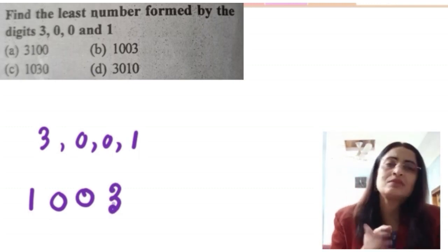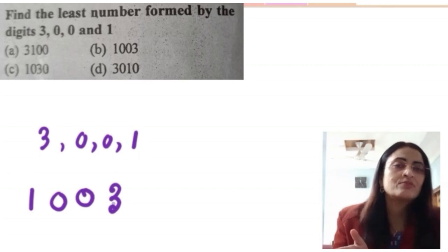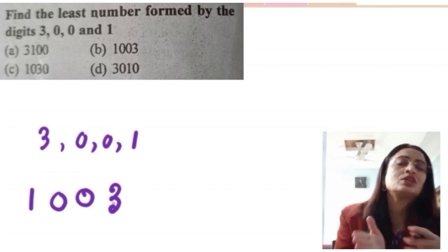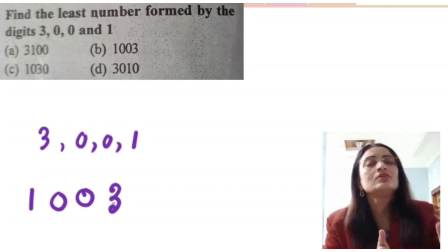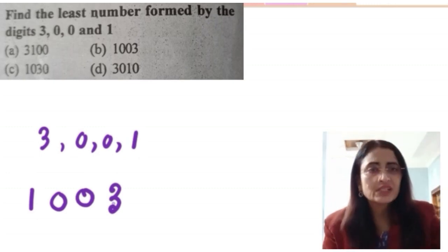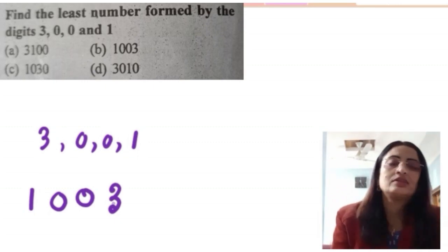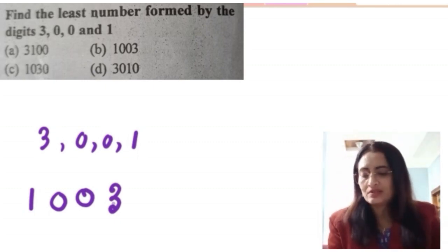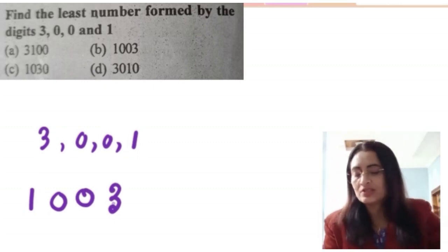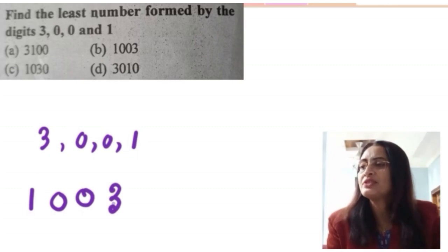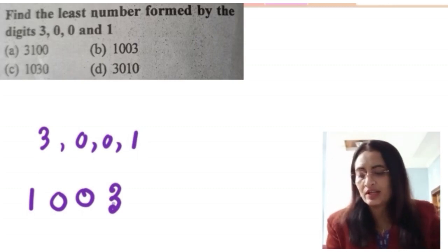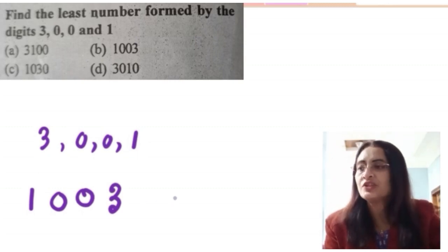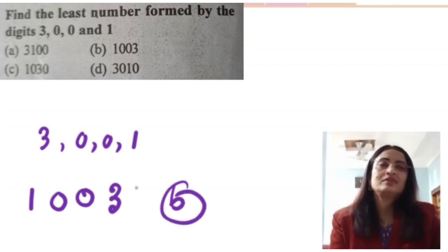We start from the smallest digit and gradually go to the largest to get the least number. The digits are 3, 0, 0, 1. We cannot start with 0, so we place 1 first, then 0, 0, then 3. So the least number is 1003. Option B is the correct answer.